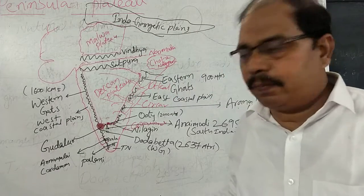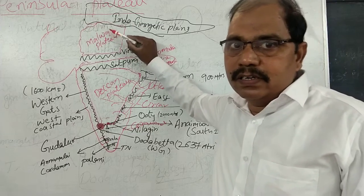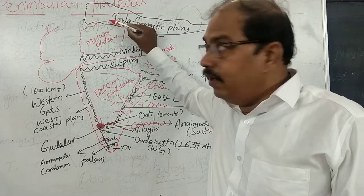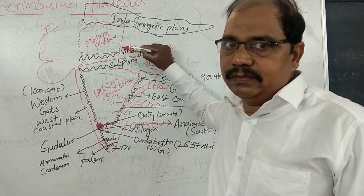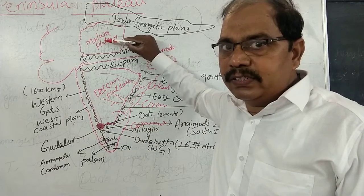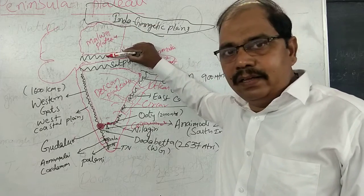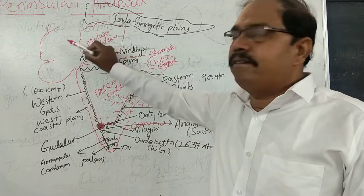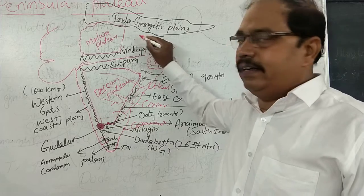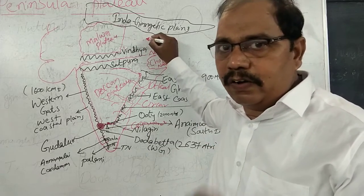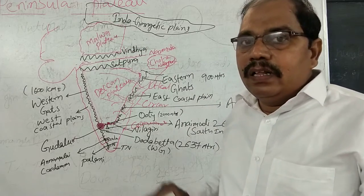On the southern side of the Indo-Gangetic Plain, one plateau is there — it is called the Malwa Plateau. The boundaries of the Malwa Plateau are: north side — the Indo-Gangetic Plain; south side — the Vindhya mountain range; west side — a third boundary; and east side — the Central Highlands.